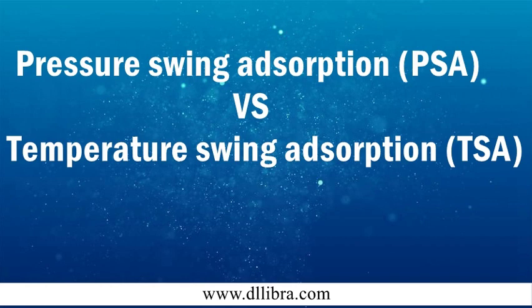What is PSA? Pressure swing adsorption (PSA) is a gas adsorption and separation process in which gas components are adsorbed at high pressure and desorbed at low pressure in an adsorption bed. The adsorption isotherm reveals the law that adsorbate adsorption on the adsorbent varies with the rise and fall of pressure. Using this law, the separation of specific components is accomplished by the pressure swing process of adsorption at higher pressure and desorption at lower pressure. After adsorption is completed, the partial pressure of adsorbate needs to be reduced as much as possible to allow full desorption and complete adsorbent regeneration.